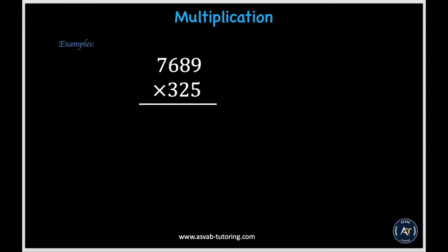In this next example, we are being told to multiply 7,689 times 325. We first start with the ones digit and multiply it with all the digits of the first number. So 5 times 9 gives us 45; put down the 5 and carry over the 4. Then 5 times 8 gives us 40, and 40 plus 4 gives us 44; put down the 4 and carry over 4. Then 5 times 6 gives us 30, and 30 plus 4 gives us 34; put down the 4 and carry over 3. Then 5 times 7 gives us 35, and 35 plus 3 gives us 38; so we put down 38.